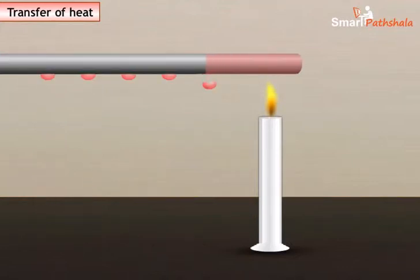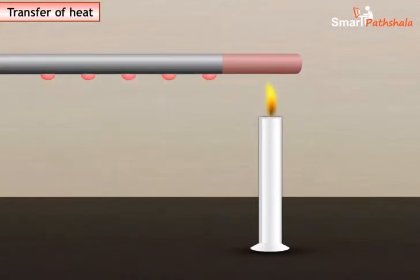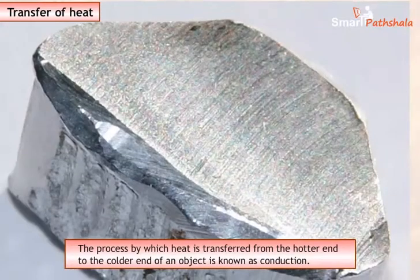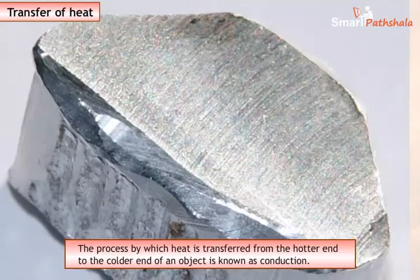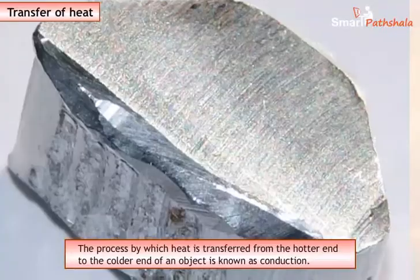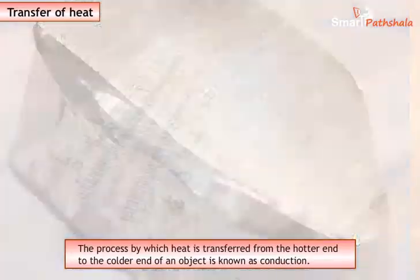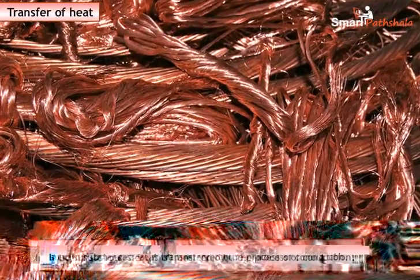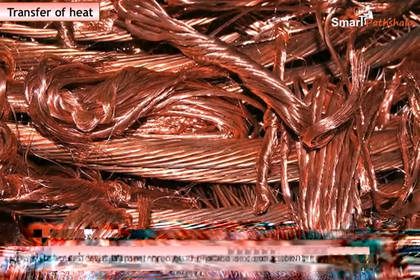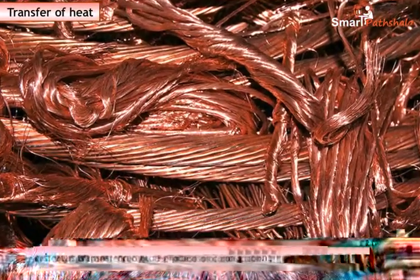From this activity, we can understand that heat is transferred from the end nearest to the flame to the other end. The process by which heat is transferred from the hotter end to the colder end of an object is known as conduction. In solid substances, heat is transferred by the process of conduction.